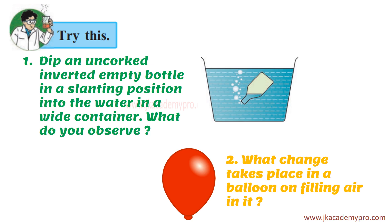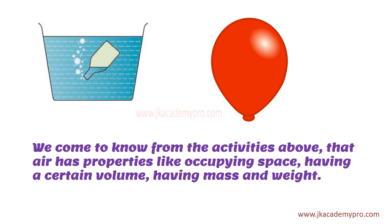Now try these two activities. First, dip an uncorked inverted empty bottle in a slanting position in water in a wide container. You will see that water slowly enters the bottle and air bubbles come out. Second, what change takes place in a balloon on filling air in it? When not inflated the balloon is small, but as you blow air into it, it becomes bigger and bigger.